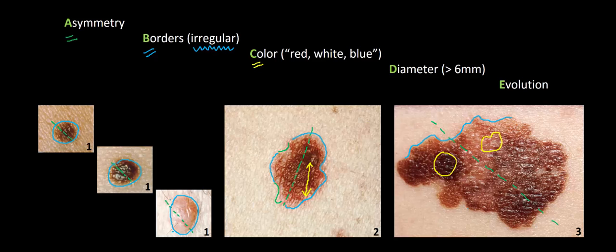If you identify color variation in a pigmented lesion, three colors are particularly worrisome: red, white, and blue — the colors of the American flag. Red can indicate irritation or inflammation, which often accompanies melanoma. White is also worrisome; in our melanoma image you can see areas of white patches within the lesion, a phenomenon called regression, where the body mounts an immune response against the atypical cancerous melanocytes and these areas become scarred over by underlying inflammation.